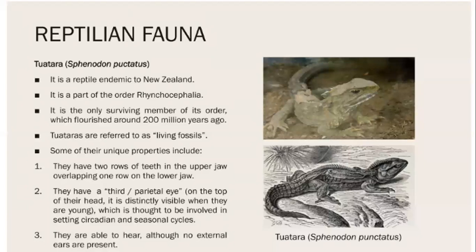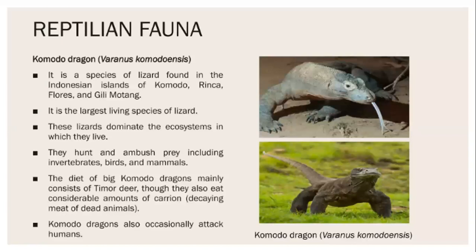The Tuatara (Sphenodon punctatus) is endemic and confined to New Zealand. It evolved and flourished about 200 million years ago and is referred to as a living fossil. Unique features include a row of teeth on the upper jaw that overlaps the lower jaw, the presence of a parietal eye, a hearing capability, but no external ear.